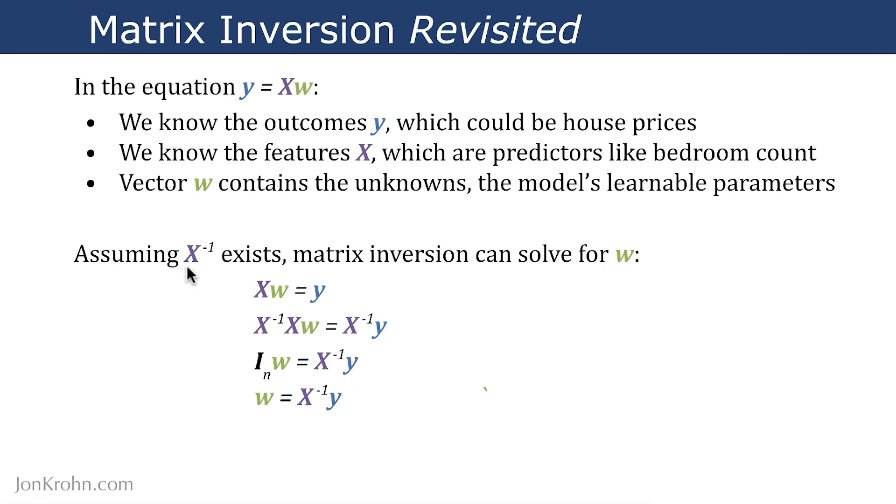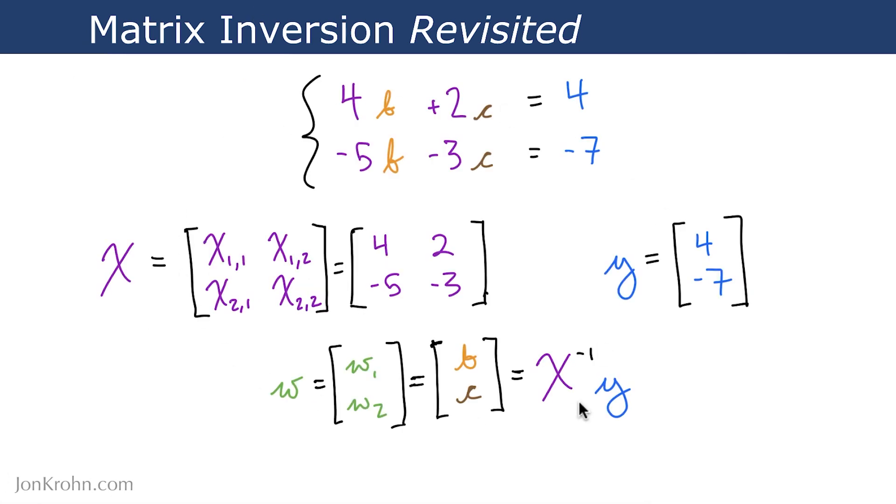But the problem that we have here is in this real-world scenario where we have a non-square matrix, which has far more rows than it has columns, because we have far more houses in our dataset than we have features like bedroom count. So we can't use matrix inversion. In the intro to linear algebra subject, we did use matrix inversion to solve for the unknown weights in this really small model, the system of linear equations. You can go back and visit that if you want a recap of matrix inversion. But this kind of thing that we were doing here when we had a square matrix, a two-by-two matrix where we could invert, that's not possible with our real-world house price dataset.